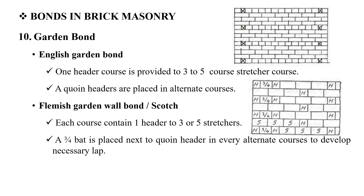The next bond is the Garden Wall bond. There are two types: the English Garden Wall bond and the Flemish Garden Wall bond. In the English Garden Wall bond, there are typically 5 stretchers to every alternate header course.